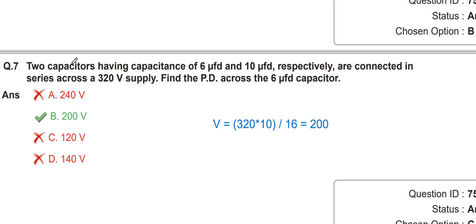Two capacitors having capacitance of 6 µF and 10 µF respectively are connected in series across a 320 V supply. Find the potential difference across the 6 µF capacitor. Apply the voltage division rule across the capacitors: V = 320 × 10 / (6 + 10) = 320 × 10 / 16 = 200 volts.